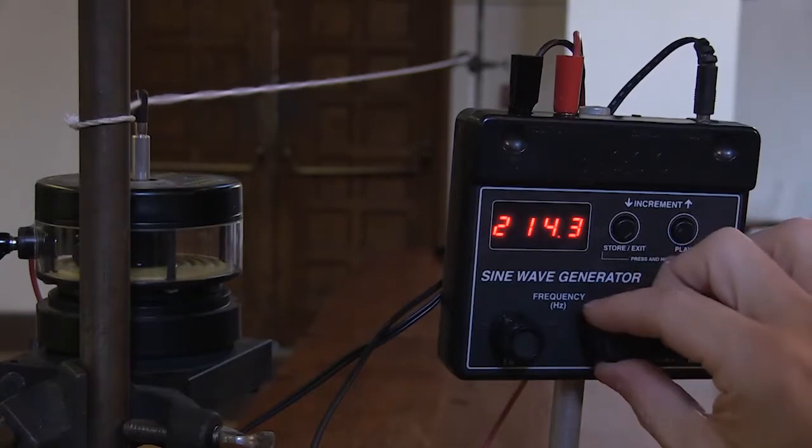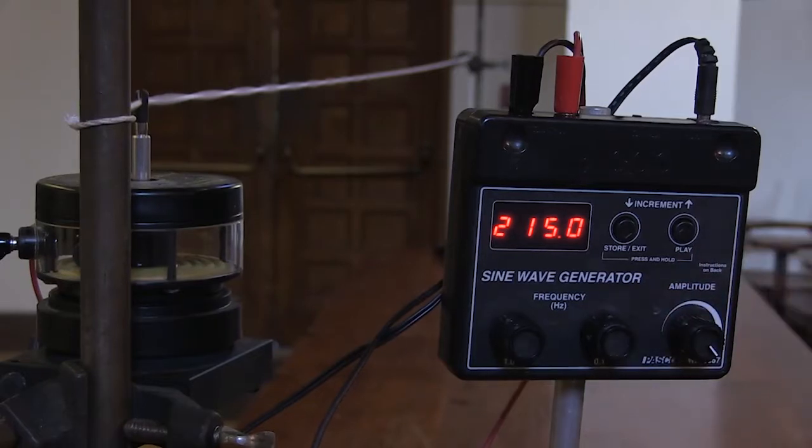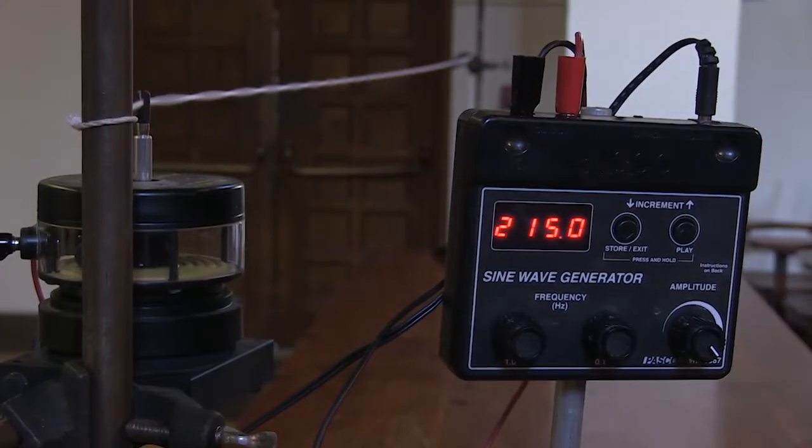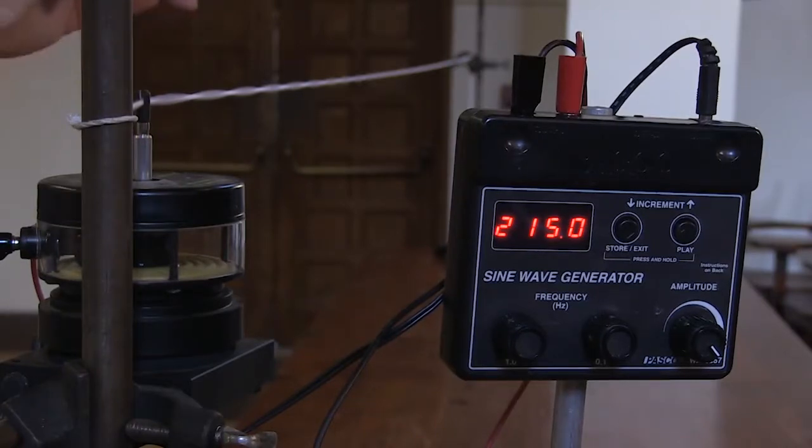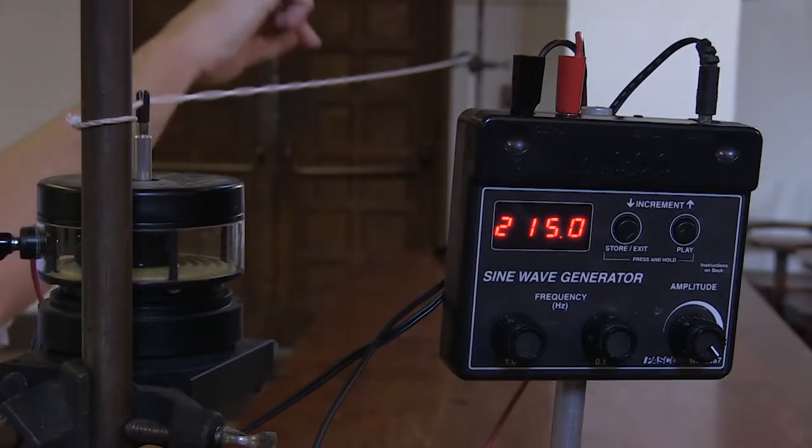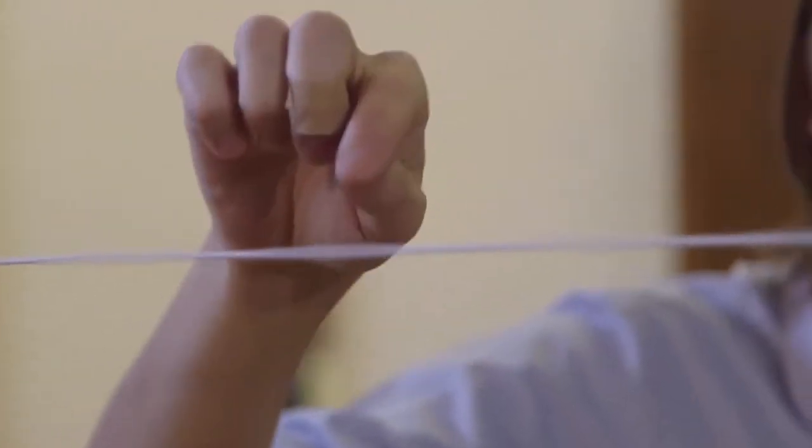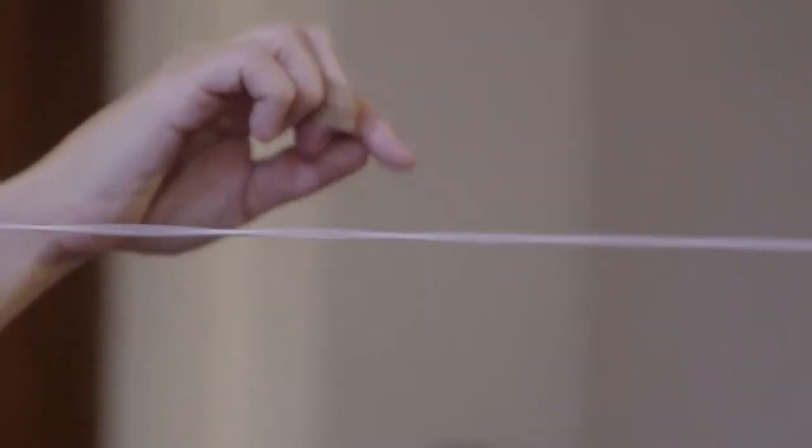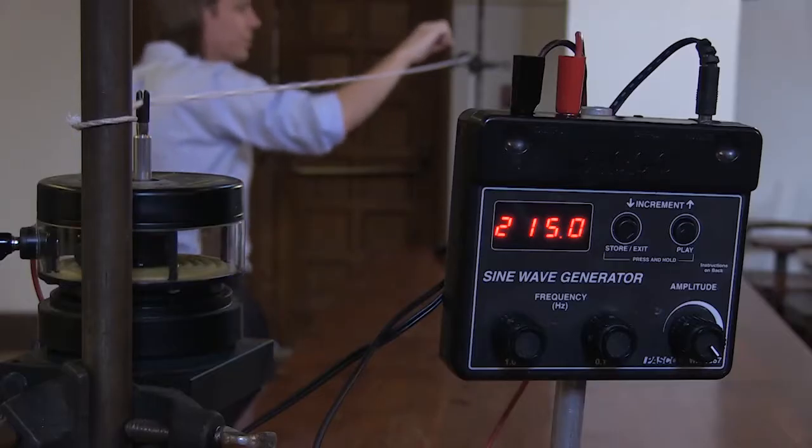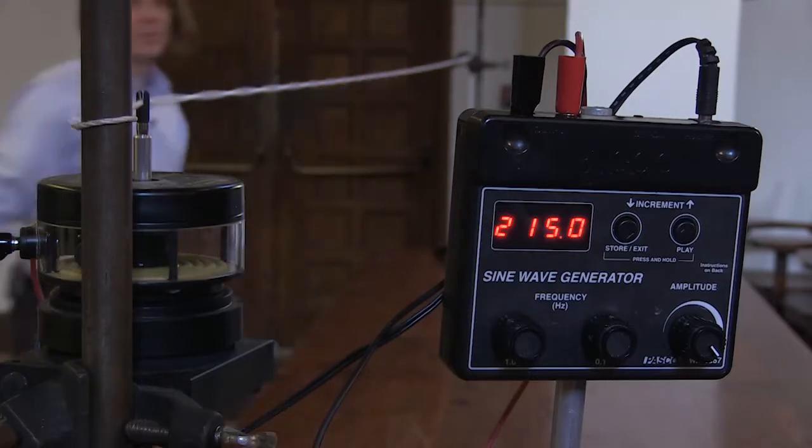They're getting pretty small. 35 is at 215.0. You can still see them. I'm going to count the 35 just to make sure. 1, 2, 3, 4, 5, 6, 7, 8, 9, 10, 11, 12, 13, 14, 15, 16, 17, 19, 20, 21, 22, 23, 24, 25, 26, 27, 28, 29, 30, 1, 2, 3, 4, 35. Sure enough.